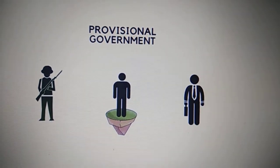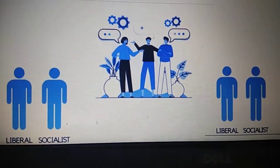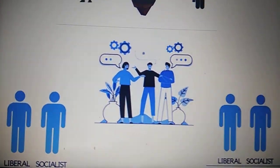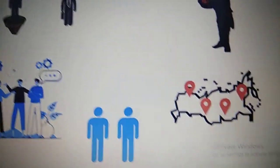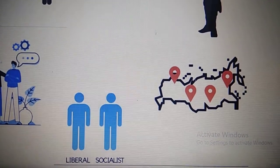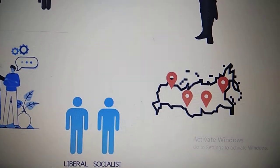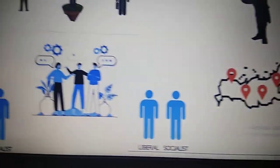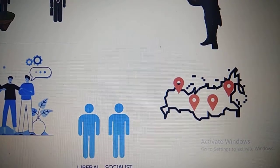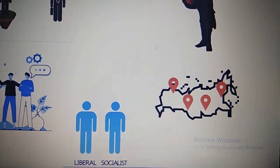The provisional government was supported by liberals and socialists and they did some good work. The restrictions on public meetings and associations were removed, and they also made Soviet councils — remember the Petrograd Soviet, where both soldiers and peasants got together and formed a Soviet. This kind of Soviet was set up everywhere in Russia. Soviets meaning council, or a group of people, or associations.